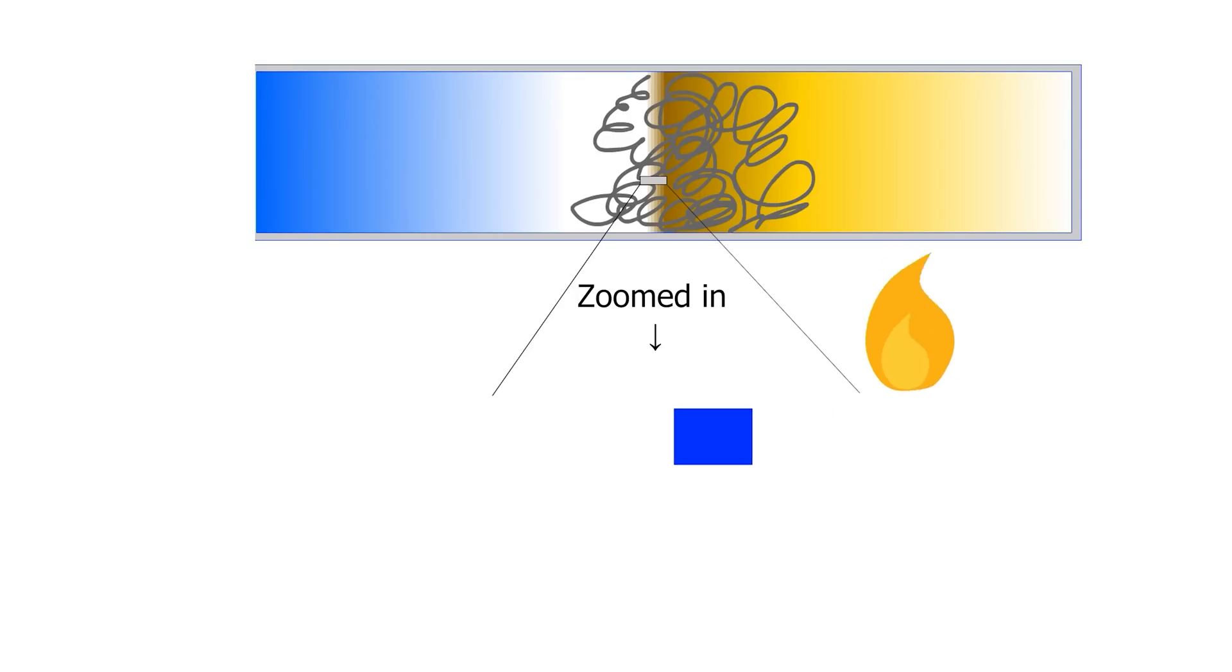So why does this make a sound? Well when we heat one side of the tube it expands the gas, but then as that hot gas moves toward the cooler end of the tube it contracts and moves back towards the hot end of the tube. Then it heats up again and the whole process starts over.